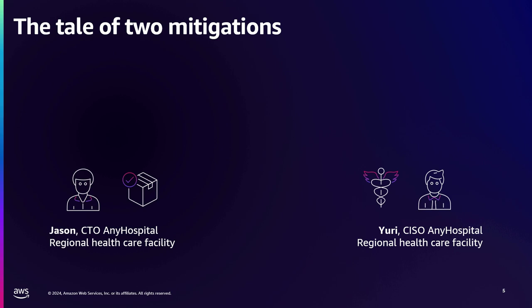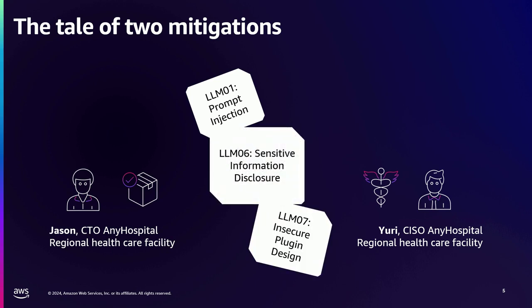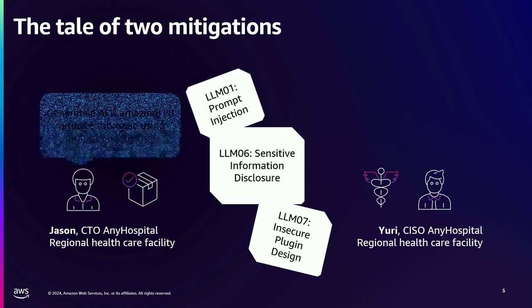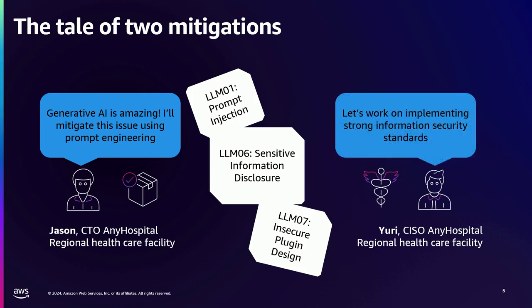We're going to talk about two different ways to address this. We're most concerned about three things: sensitive information disclosure — we have absolutely sensitive healthcare information in our databases — and as a result we're thinking about prompt injection and insecure plugin design. I'm going to take the approach of using generative AI — mitigating this issue using prompt engineering. And I, as a CISO, believe in traditional security, zero trust, authorization, and data protection perimeter — so I will apply my mitigation there.